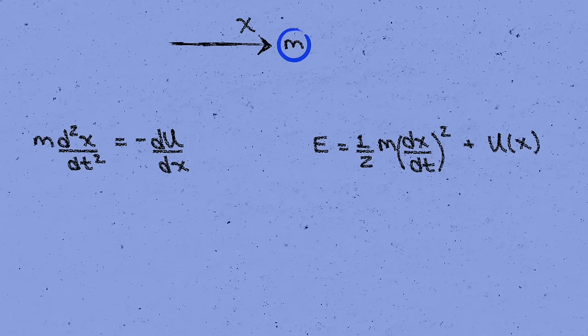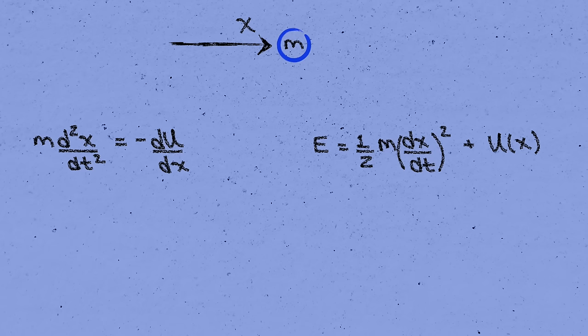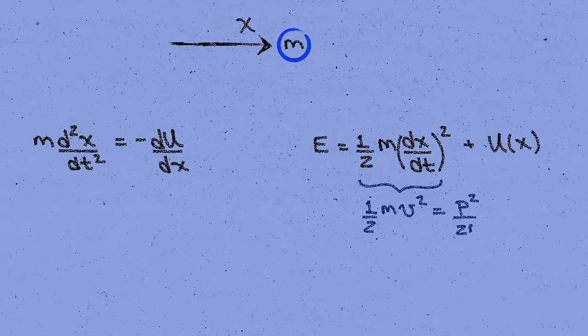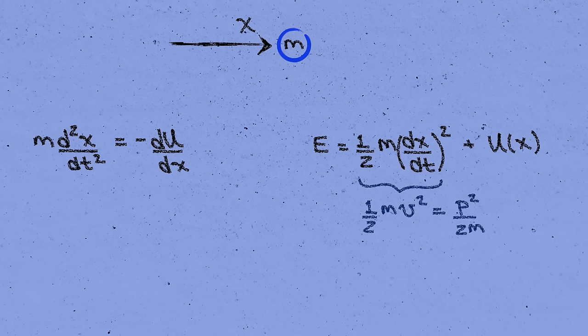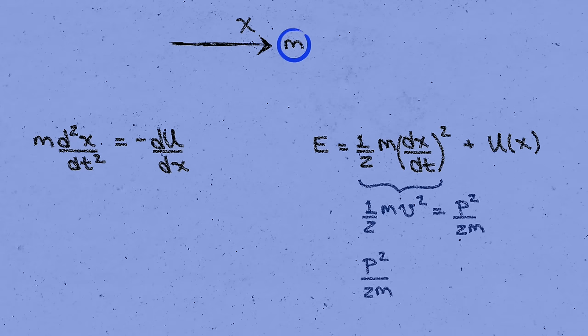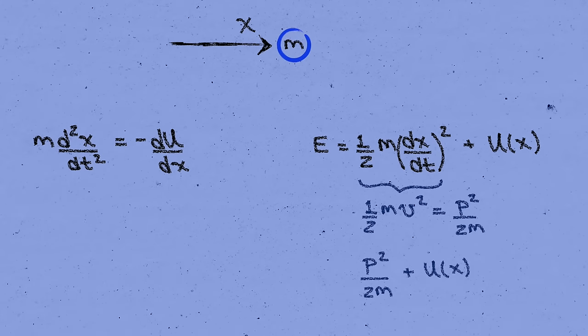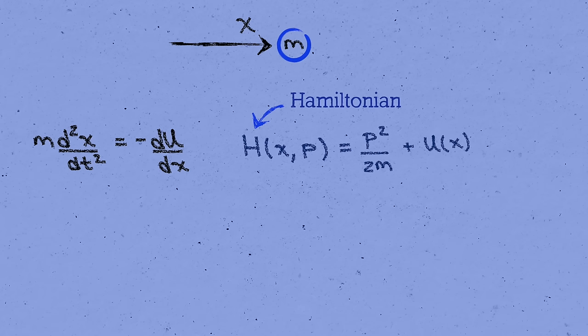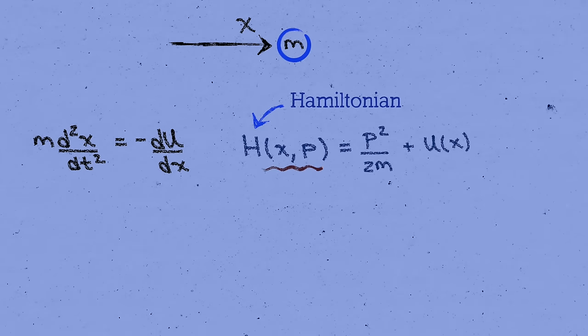Actually, it's convenient to write this instead in terms of the momentum, p equals mv. Then the kinetic energy, ½mv squared, can be rewritten as p squared over 2m. And so we get p squared over 2m plus u. This quantity is called the Hamiltonian of the system, and notice that I've written it here as a function of x and p.